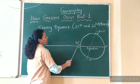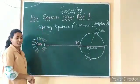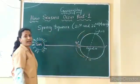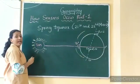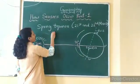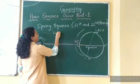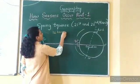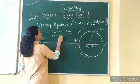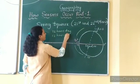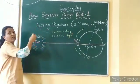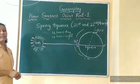On spring equinox, sun rays are perpendicular on the equator. As a result, both hemispheres will receive an equal amount of solar radiation and the length of day and night are equal — 12 hours day and 12 hours night. In other words, on equinox, the duration of day and night will be equal.